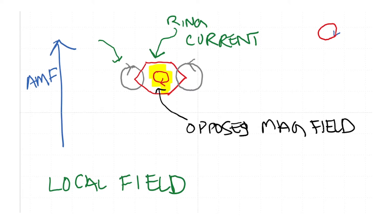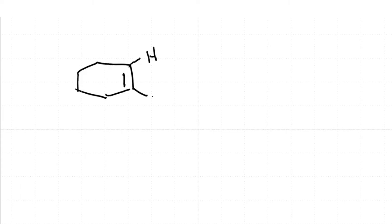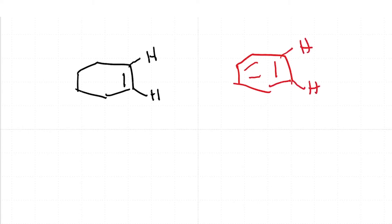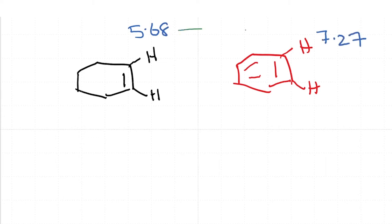The electrons are going to have two different effects depending on where the hydrogen is placed. When you compare the chemical shift value for an olefin, the chemical shift value for those hydrogens is about 5.68, whereas for benzene it is 7.27. This is a very significant difference. This difference in the aromatic ring is attributed to the ring current effect that is prevalent only in aromatic rings.